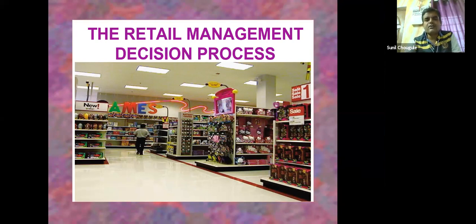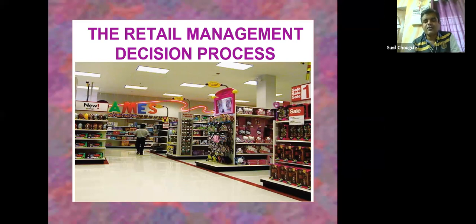For a small unorganized retailer in our area, 10,000 kg or 10 tons is too big a quantity. So when it comes to buying product, for an organized retailer that decision process also involves a high level of bargaining. These are all part of the retail management decision process. Now we are looking into the decision process of retailers in the organized sector only; we don't look into the unorganized sector.